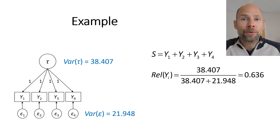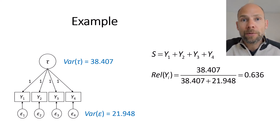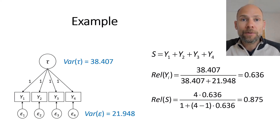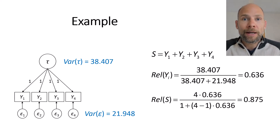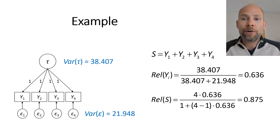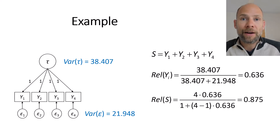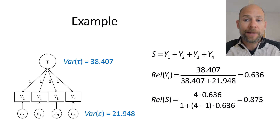However, this is the reliability of each component, not the reliability of the composite S. The sum will be more reliable because it consists of more components and random measurement errors average out. When we apply the Spearman-Brown formula to calculate the reliability of the composite y1 plus y2 plus y3 plus y4, we get 0.875 — substantially higher than 0.636. So using the sum of all four tests gives us a composite that is 87.5% true score variance, compared to only 63.6% for each component.